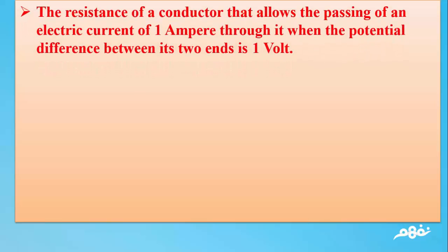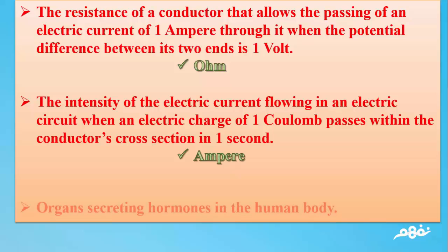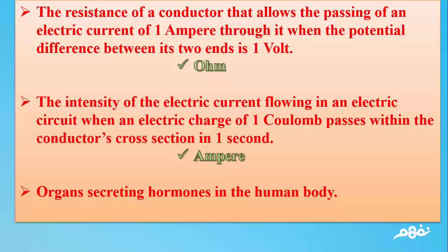Number 25: The resistance of a conductor that allows the passing of an electric current of 1 ampere through it when the potential difference between its two ends is 1 volt. The answer: Ohm. Number 26: The intensity of the electric current flowing in an electric circuit when an electric charge of 1 Coulomb passes within the conductor's cross section in 1 second. The answer: Ampere. Number 27: Organ secreting hormones in the human body. The answer: Endocrine glands.